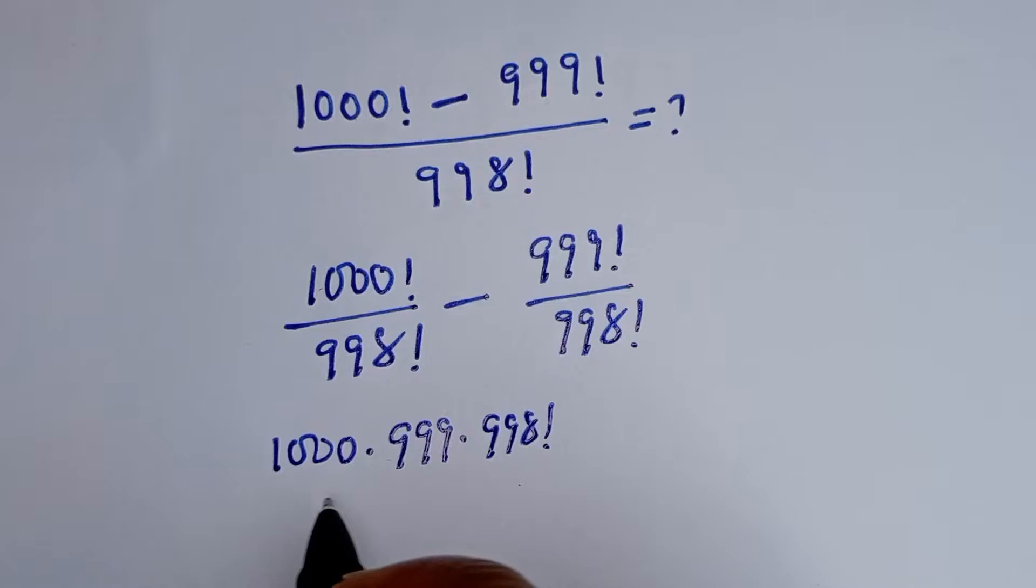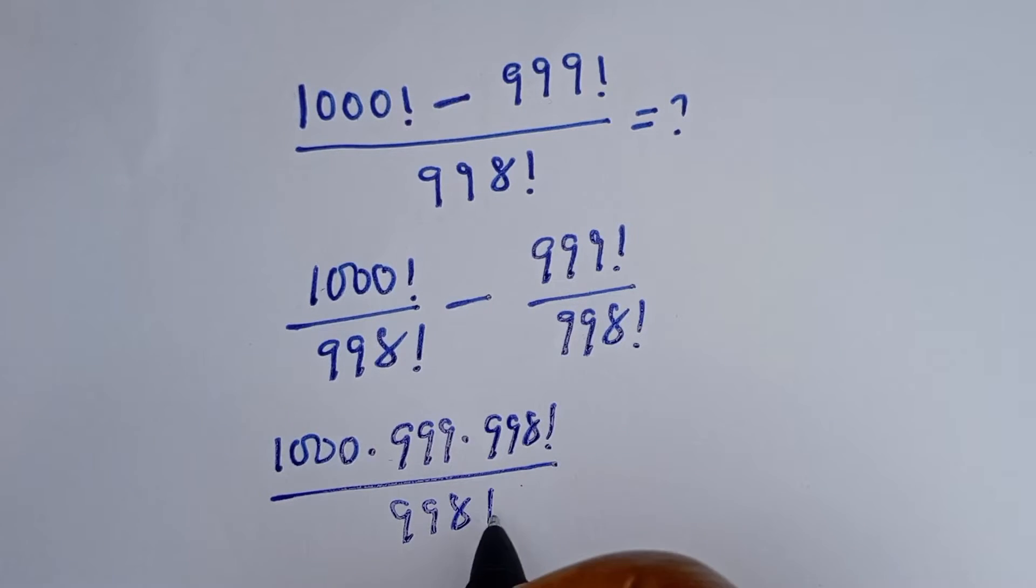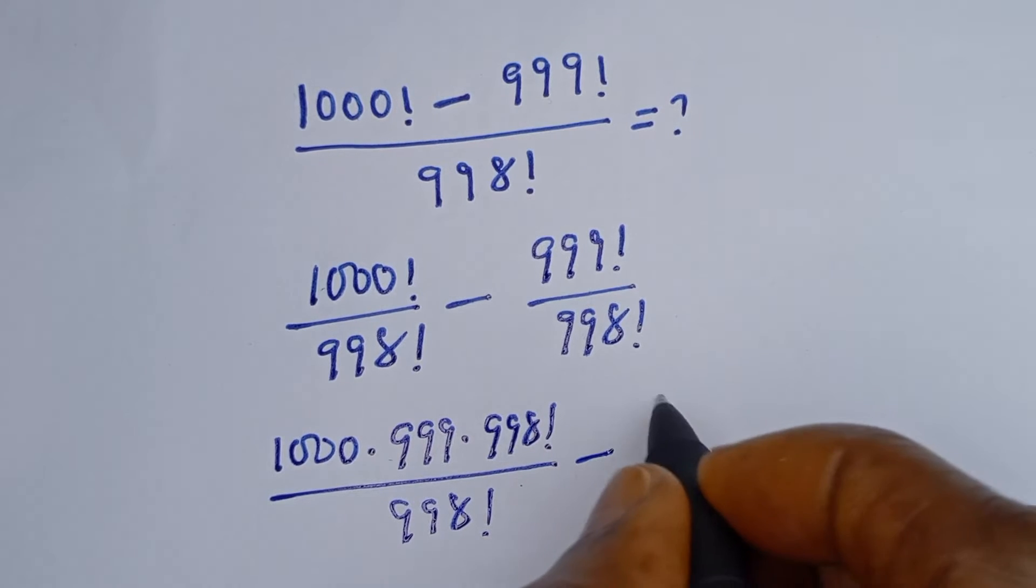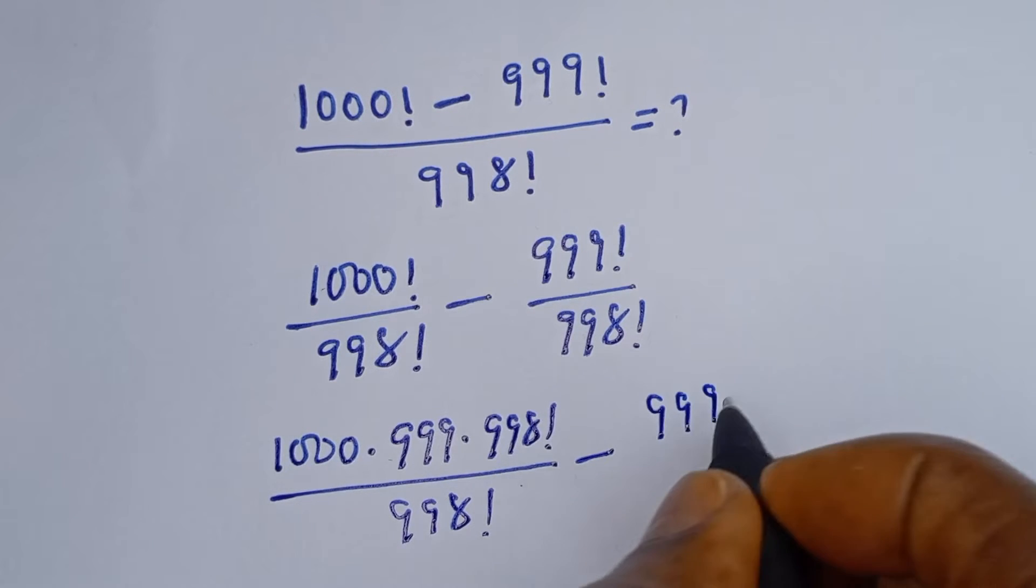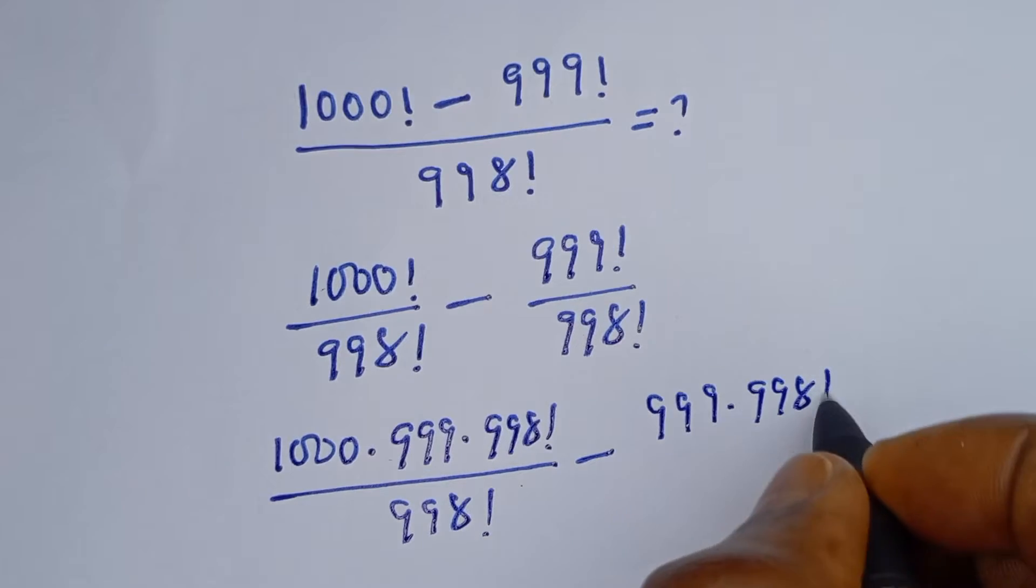Minus 999 multiplied by 998 factorial divided by 998 factorial.